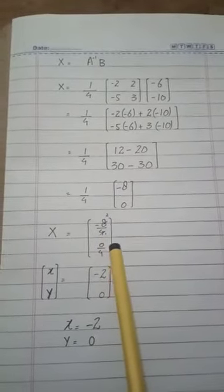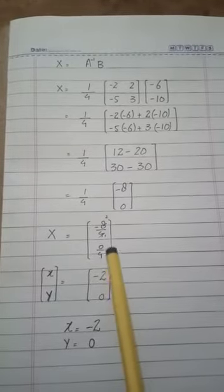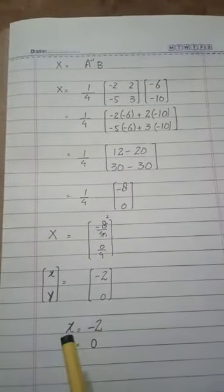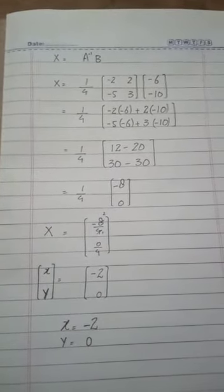We get minus 2 and 0. Zero over anything is 0. So the value of x is minus 2 and y is 0. Thank you.